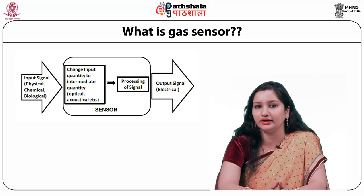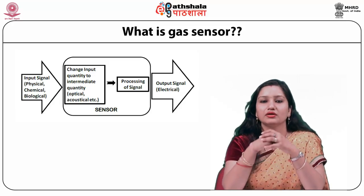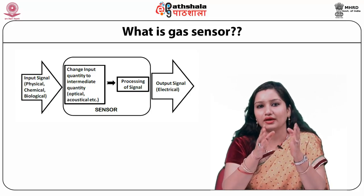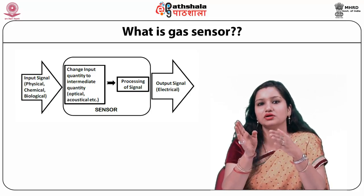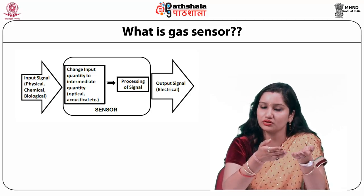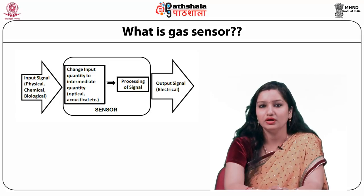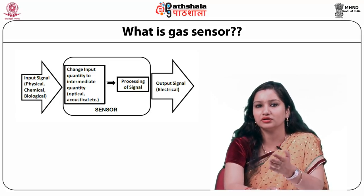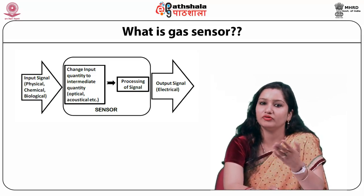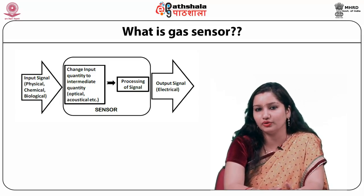Before we go into the detail, let's have an introduction — what is a gas sensor. A sensor is a device that measures change in physical, chemical, or biological quantity and converts it into a signal which can be measured or read by an instrument or observer. Therefore, a sensor is a transducer that converts a non-electrical value — physical or chemical — to preferably an electrical value that can be measured.